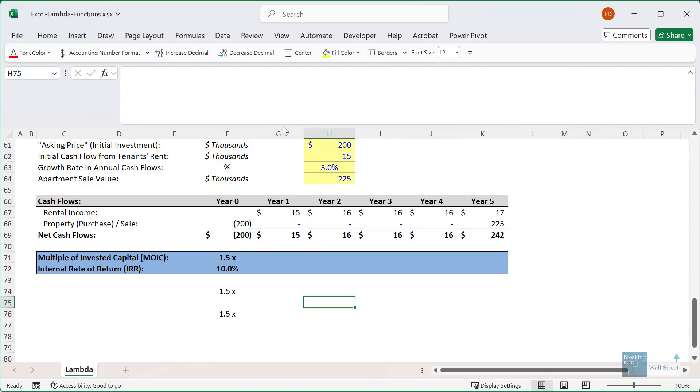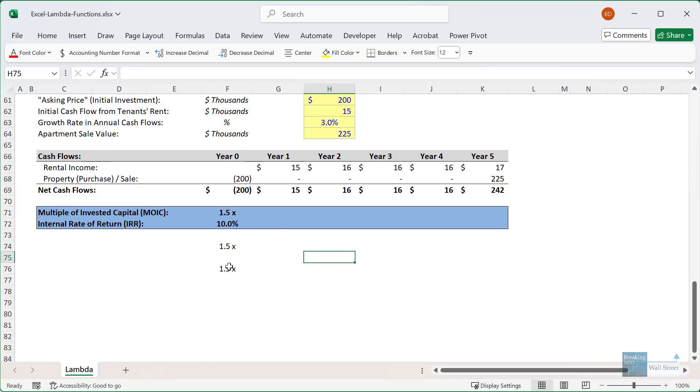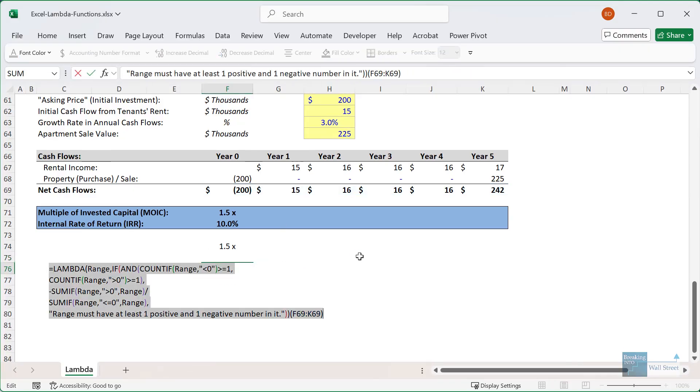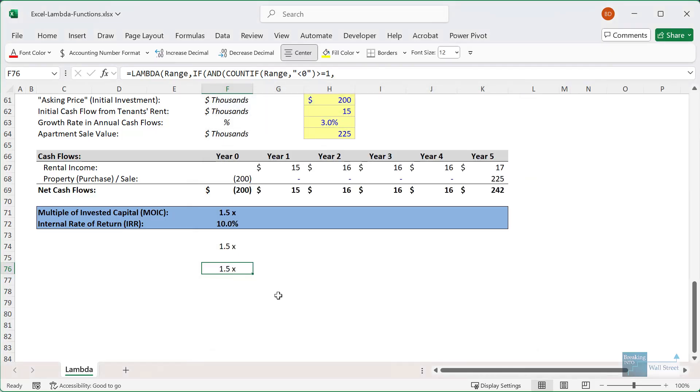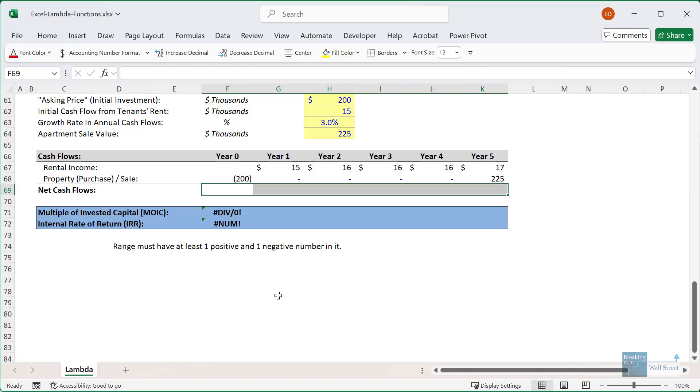Now I'm going to shrink this formula bar back again, because we don't really need it to be that big for anything else. What I can now do is take this whole function, and then go into the name manager where we have the MOIC function defined. And I can select this whole thing and then paste in our new version right here. And I'll delete the range reference because we don't want that in the named version of this. And I'll say close, or I can just press enter. And then close. Now once we've done that, we can go back here and test to make sure that it now works with detecting invalid input.